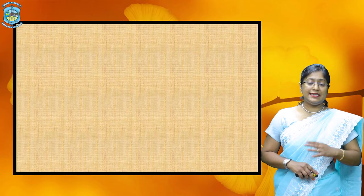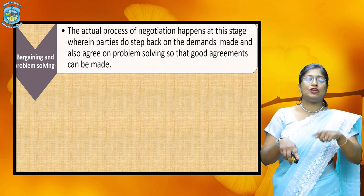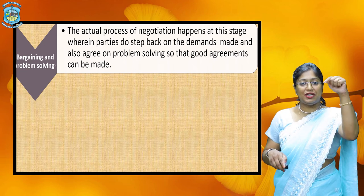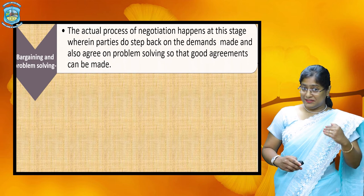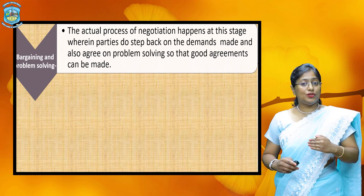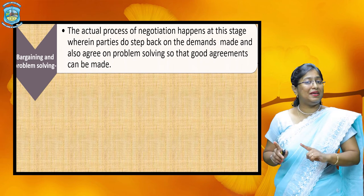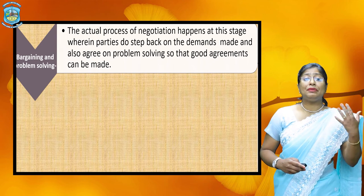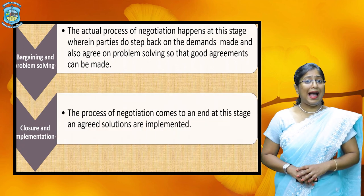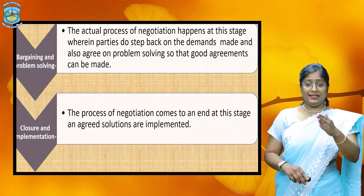The fourth step is bargaining and problem solving. The actual process of bargaining or negotiation happens at this stage, when the parties step back on their demands to a certain extent and also agree upon problem solving, so that good agreements can be made where both the parties benefit in a mutual way. The fifth and last stage is closure and implementation. The process of negotiation comes to an end at this stage and the agreed solutions are implemented.